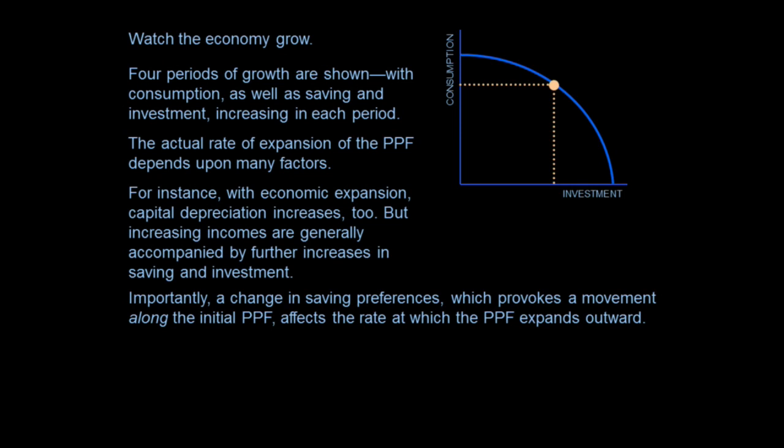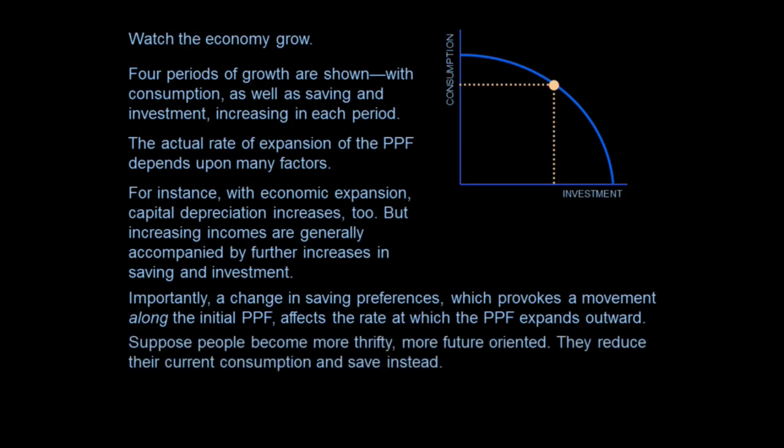Importantly, a change in saving preferences — which provokes a movement along the PPF — affects the rate at which the PPF expands. So it's possible for people to change their preferences, and if they do and the markets are working, then the economy will move along the frontier. Suppose they decide to save more — they become more thrifty, more future-oriented, they reduce current consumption and save instead. Watch the economy move along the frontier.